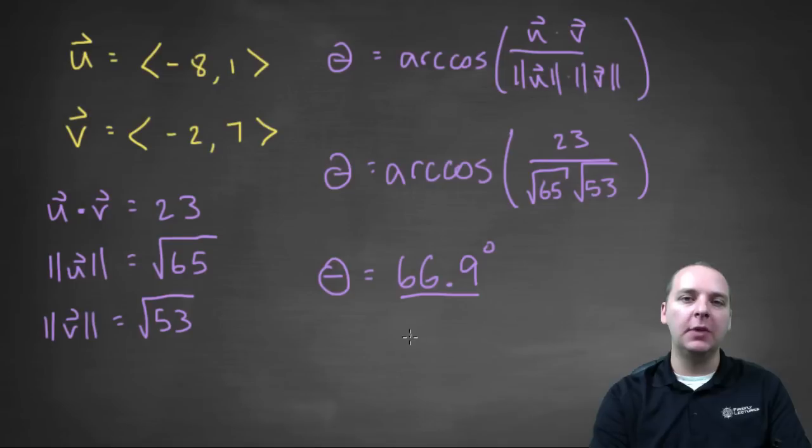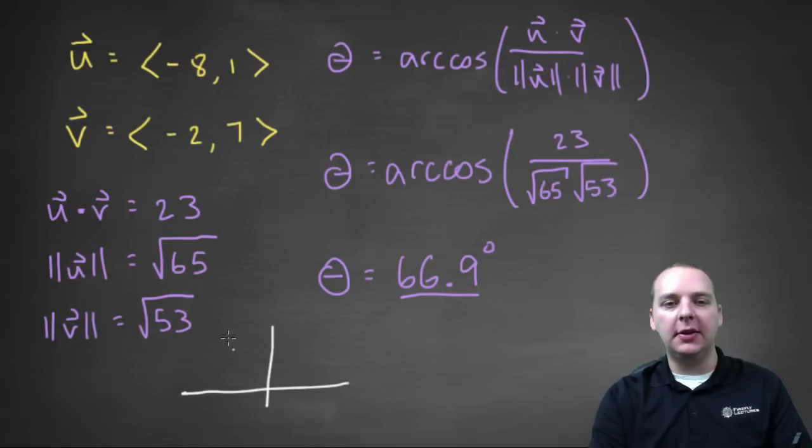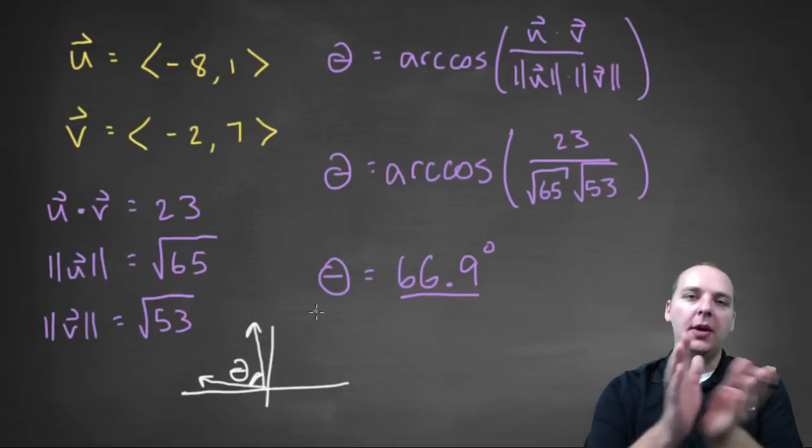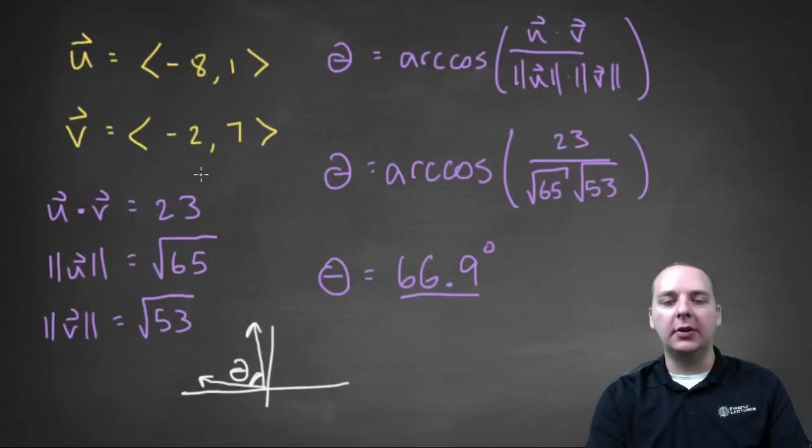So hopefully you got the same. If you want to put a little graph up here, just real quick, just to see if that seems accurate. Let's see here, negative eight comma one, that would be something kind of like this. And then negative two comma seven, that would be something kind of like this. And yeah, that seems very reasonable. It's an acute angle, less than ninety degrees, but still pretty wide, sixty-seven degrees-ish sounds very reasonable. So that's the angle made between these two vectors.